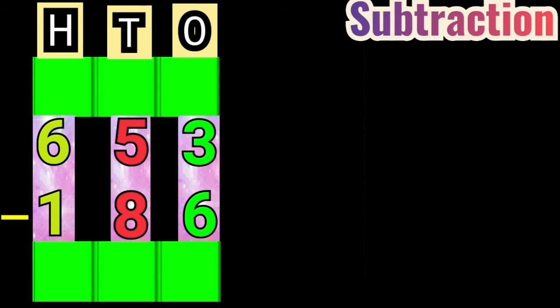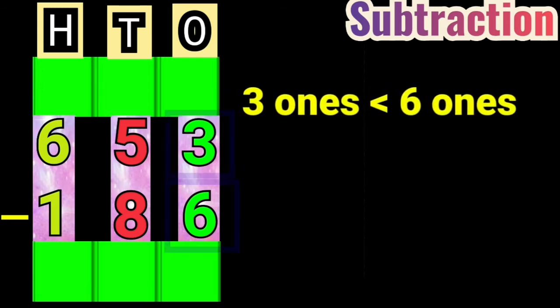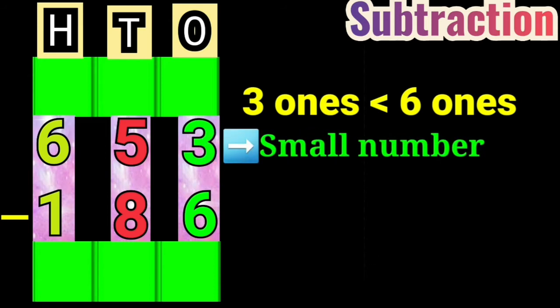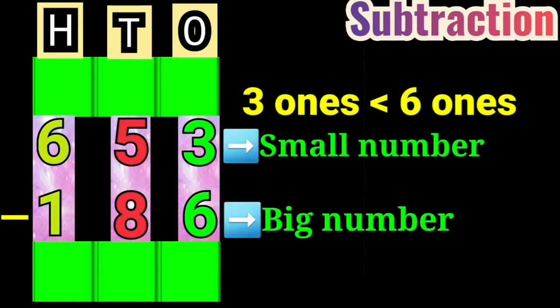We always start to subtract the numbers from ones digit. Here 3 ones is less than 6 ones. Once column 3 is small number and 6 is big number. So, we cannot subtract the numbers.